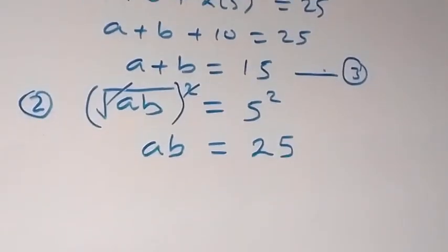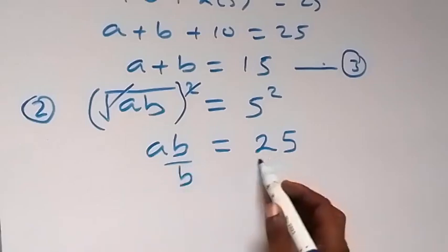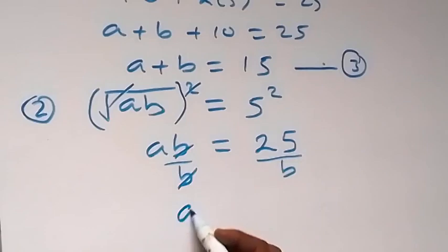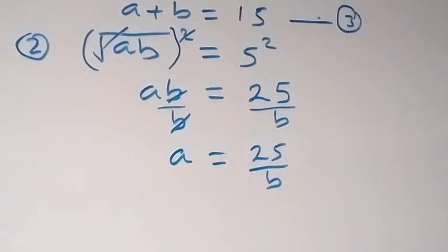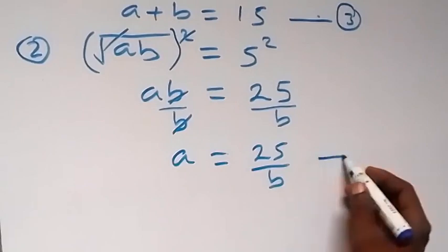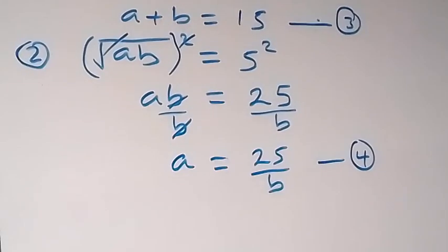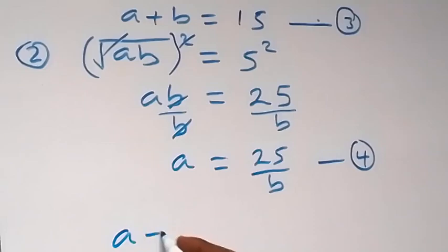From here, let's divide both sides by B to make A the subject. B cancels out, and we have A equals 25 over B. Label this as equation 4. Now let's substitute equation 4 back into equation 3, which is A plus B equals 15.